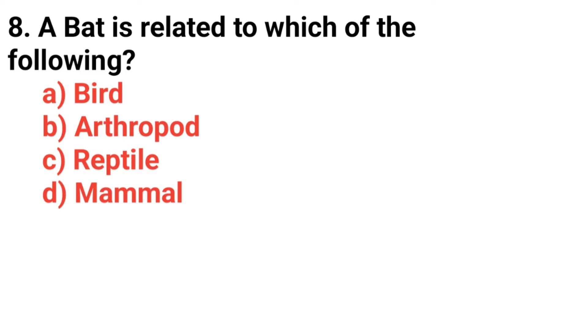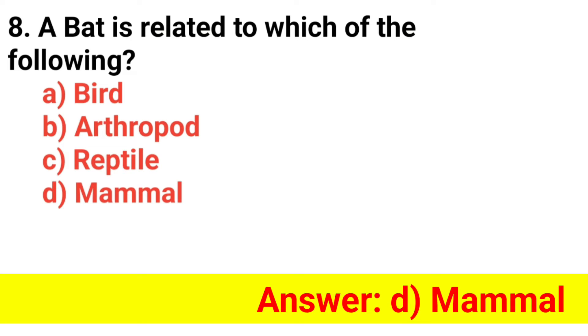Question 8. A heart of blood is related to which of the following? The answer is option D — Mammal.